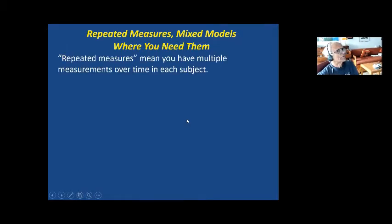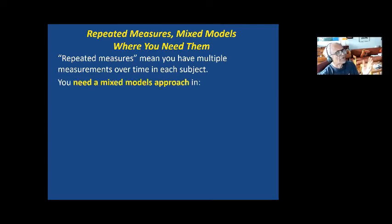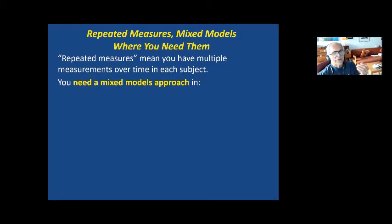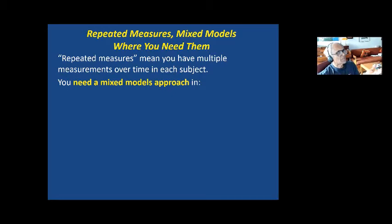Repeated measures refers to having multiple measurements in each subject — it could be two, three, or ten. Statisticians call this a mixed models approach. It's called mixed models because you tend to have some fixed factor, but then something is repeated within a subject. Whereas the data we've looked at so far had just one observation per subject, with multiple observations per subject it becomes mixed: the subject is a random factor, and other factors like diet or dose are fixed factors.